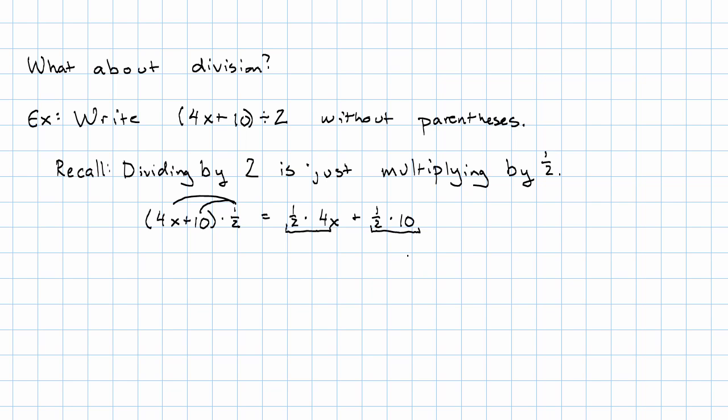Alright. Now, I can go ahead and do that arithmetic on my calculator. Or, I can just remember multiplying by 1 half is dividing by 2. So, 4 divided by 2 is 2, 10 divided by 2 is 5. We get 2x plus 5.